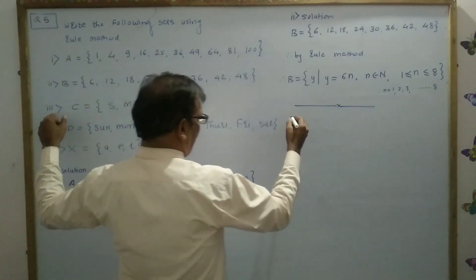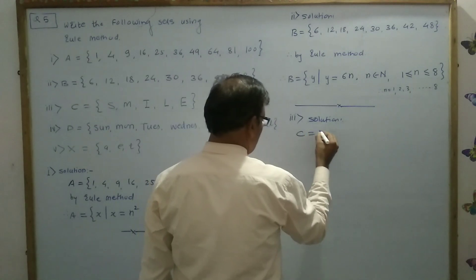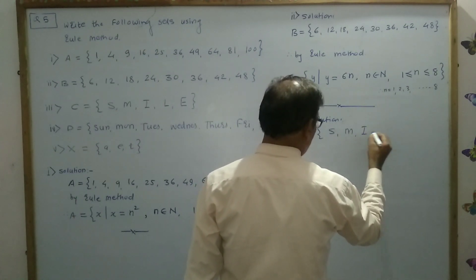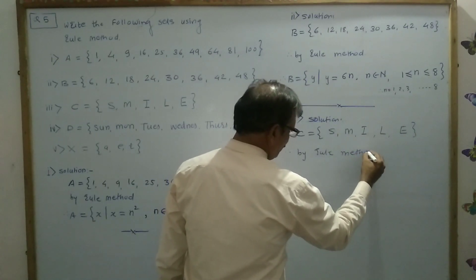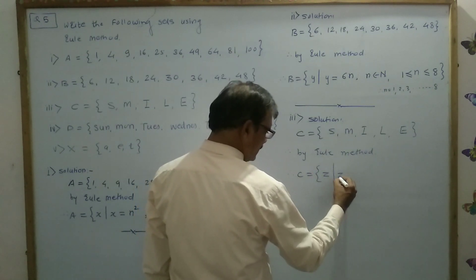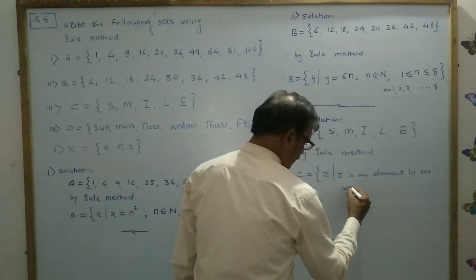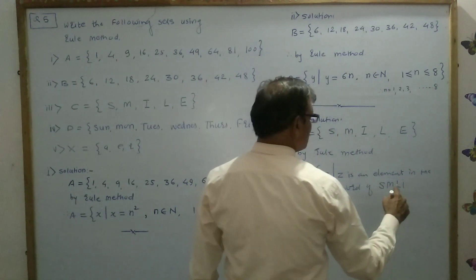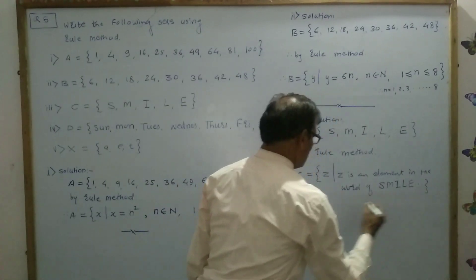Now third one: C is the set. So C is equal to S, M, I, L, E, Y — letters S, M, I, L, E and Y. By rule method, C is equal to — suppose Z is a variable such that Z is an element in the word 'smiley.' So this is your answer.